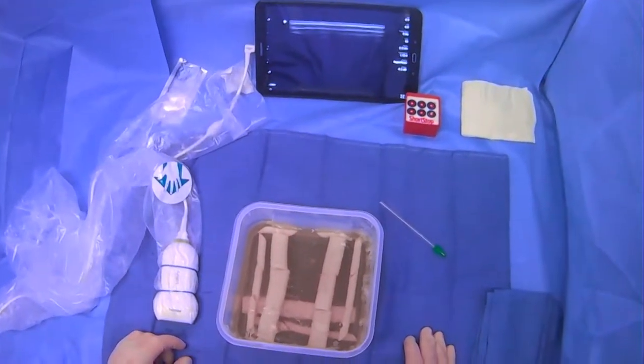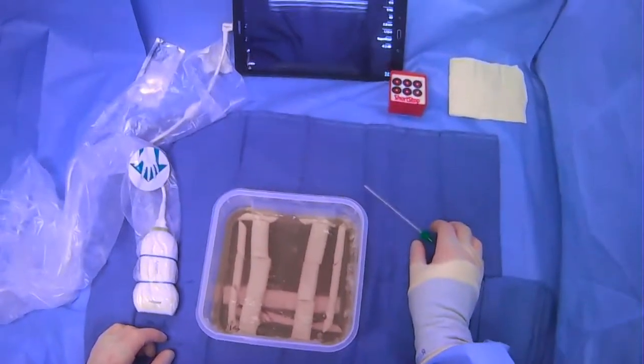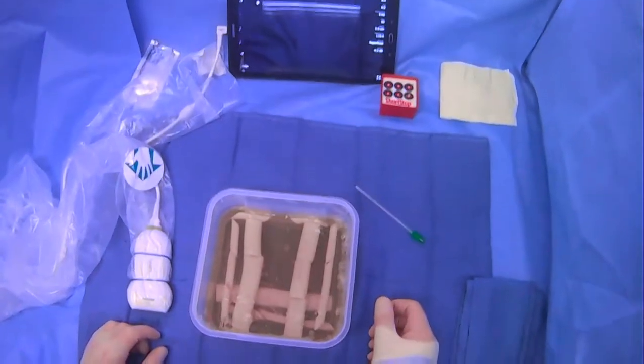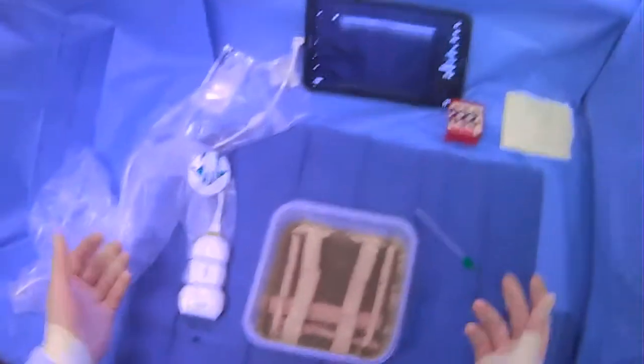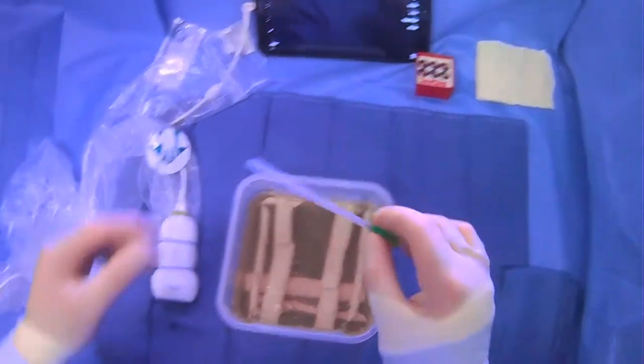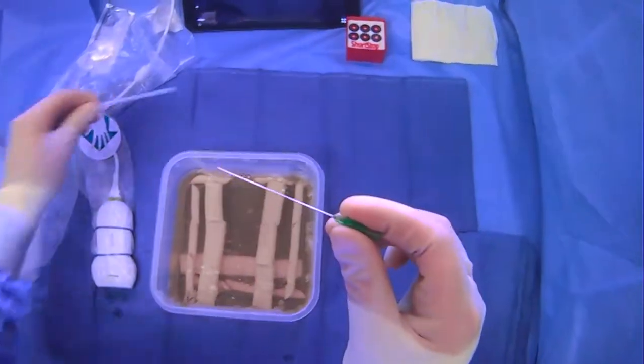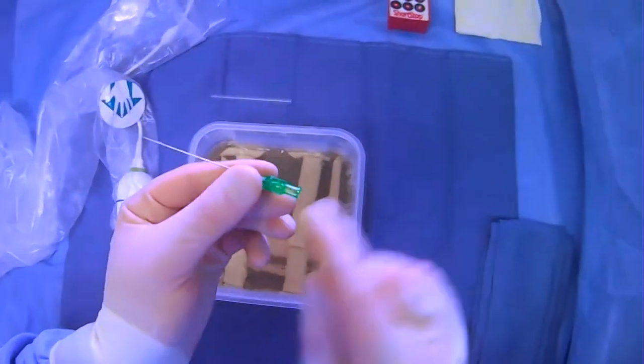I want to quickly talk about how to hold the micropuncture needle when you're gaining access into a structure like the internal jugular vein, for example. What's important to realize about the micropuncture needle is that it has these symbols here.